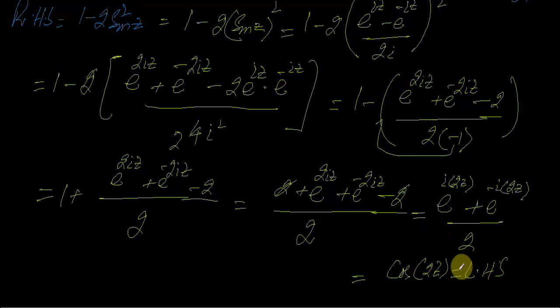So this is our identity — we have proved it. It has a lot of other identities in your book; you can prove them in this way.